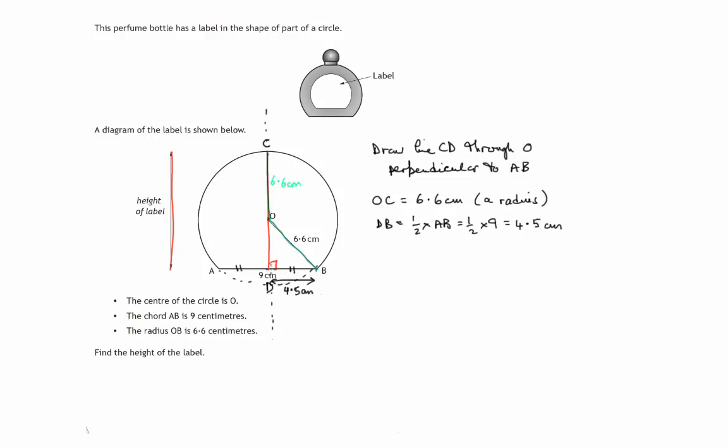So to calculate DC the height of this label it remains to calculate OD. And that's a right angle triangle that OD is in. Let's just draw that triangle out here. There's O centre of the circle, DB with measurement 6.6 for that radius and 4.5 half of the chord AB.